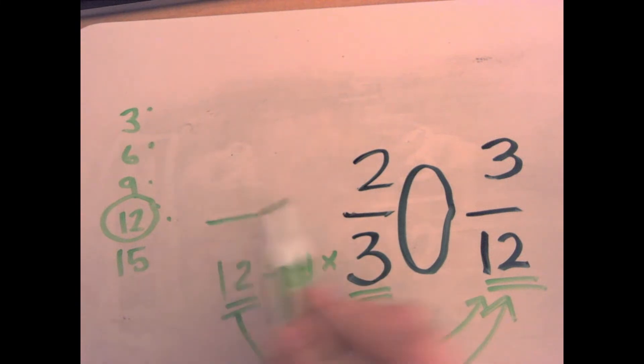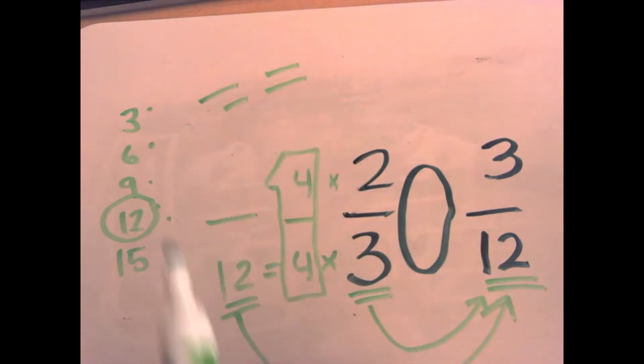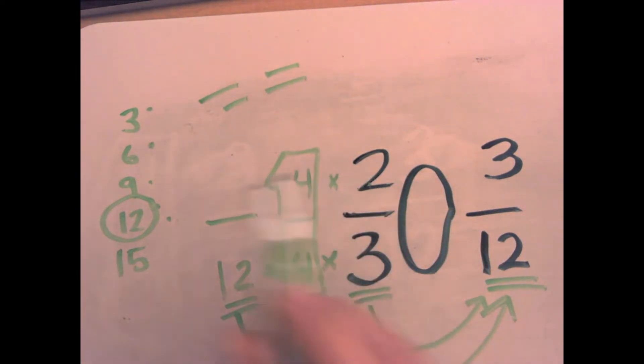So the one method tells me that if I multiply the bottom times four, I'm allowed to multiply the top times four because anything times one is itself. And when I multiply a fraction times one in fraction form, that gives me the same thing, new name. Your students will know what that means. Two times four is eight. This is eight-twelfths. And now that I have common denominators here, it's very clear to see that two-thirds is greater than three-twelfths using the one method.